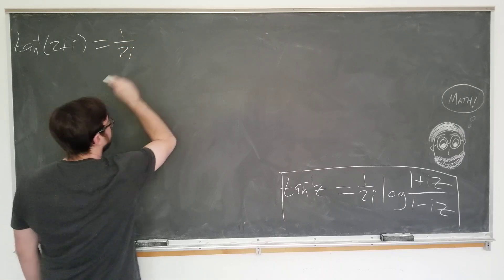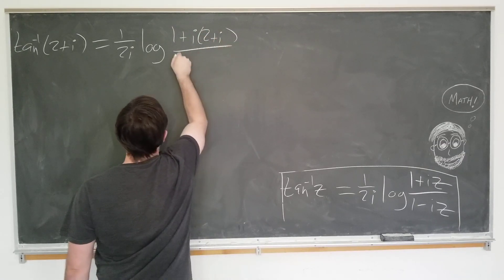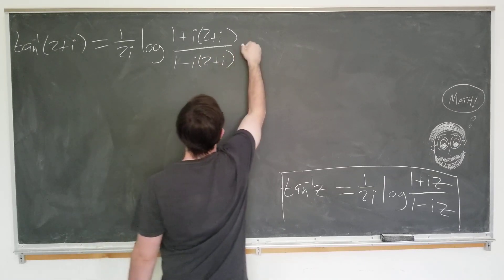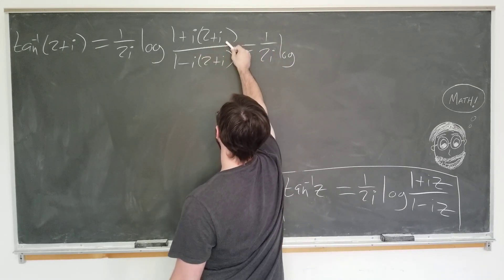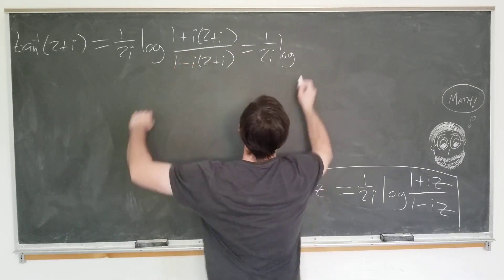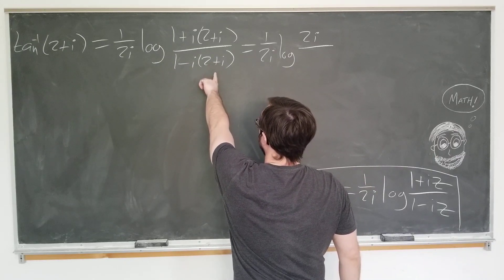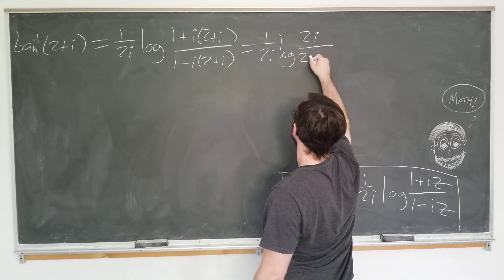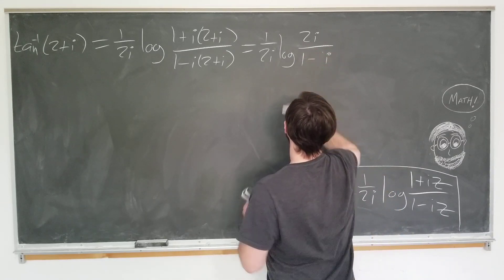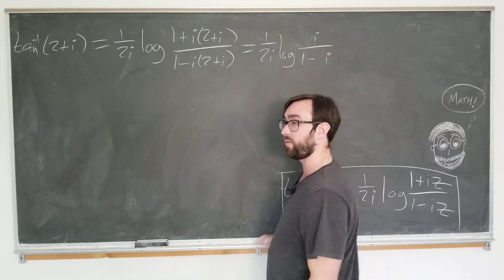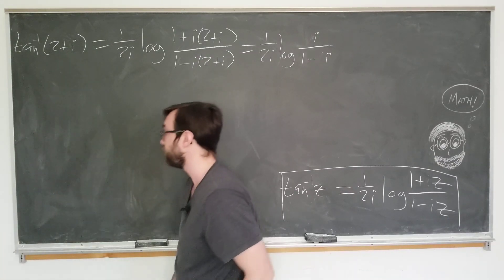Let's begin. 1 over 2i log of 1 plus i times 2 plus i over 1 minus i times 2 plus i. Just simplifying, we have 2i here. The i squared becomes minus 1. That cancels with that. So it's just 2i up top. We have a minus 2i minus i squared is plus 1, so it becomes 2 minus 2i. Obviously, the 2s can factor out everywhere. So it becomes i over 1 minus i. Now we're at the same situation as before. We just want to write this in polar coordinates.